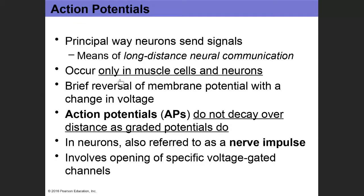Back to the action potential. I did mention graded potentials — in comparison, graded potentials are short-distance communication and action potentials are long-distance. We're able to transmit messages over a long distance using action potentials. Remember this only occurs in muscle cells and neurons. Action potentials, unlike graded potentials, do not decay. A receiving neuron at the dendrites is going to receive an electrical signal in the form of graded potentials, and those short-distance signals will emanate through the dendrites to the cell body — they'll die out if the signals aren't strong enough.